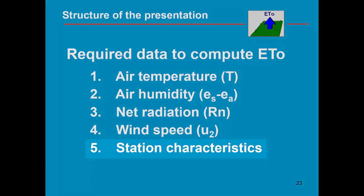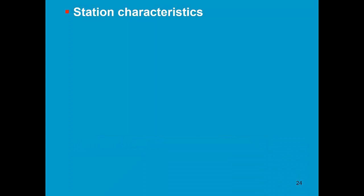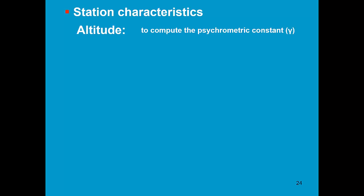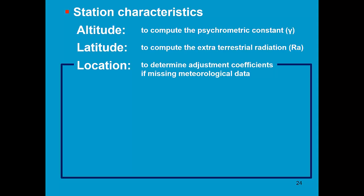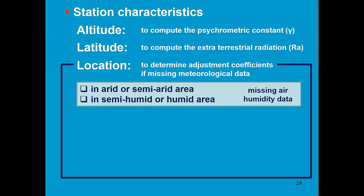Before computing ET0, we also need some station characteristics. These consist of the altitude, because I have to compute the psychrometric constant which appears in the Penman-Monteith equation. I need latitude to compute the extraterrestrial radiation, and I need the location of the station to determine adjustment coefficients needed when meteorological data is missing. I need to know if the station is located in an arid or humid area to estimate missing air humidity data. In humid or semi-humid areas, minimum temperature is a very good estimate of the dew point temperature. In arid and semi-arid areas, I need to subtract about 2 degrees from the minimum temperature to get an estimate of the dew point temperature.